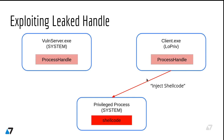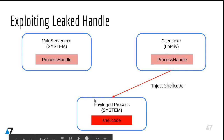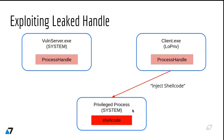Once you have full access to the remote process, exploitation is really simple — you can inject shellcode into that privileged process and start execution in a more privileged context. That's one of the techniques. There is another one I will mention later, but now let's see how to do this injection.